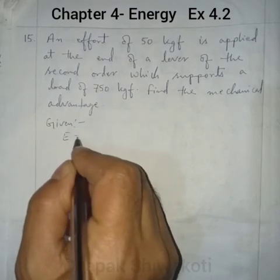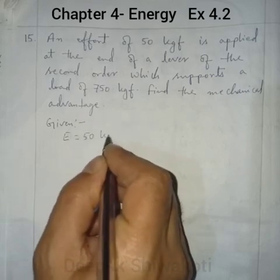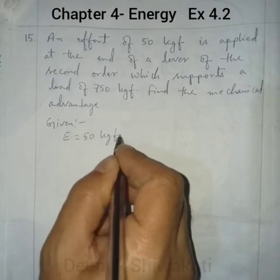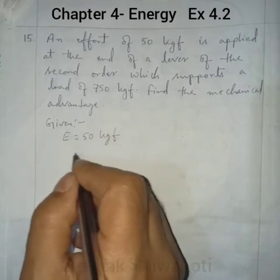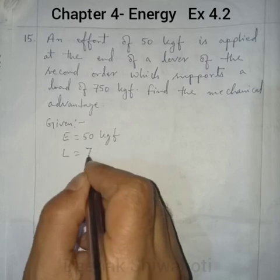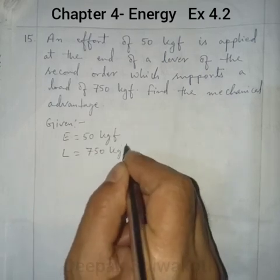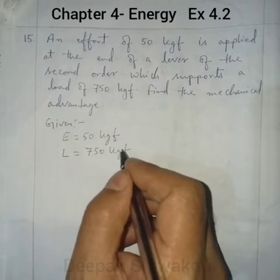Given: effort = 50 kgf, load = 750 kgf. We know that mechanical advantage = load / effort = 750 / 50 = 15. There is no unit for mechanical advantage as the kgf units cancel out.